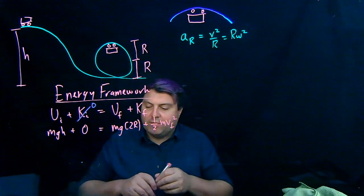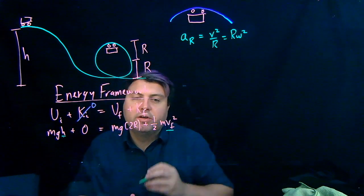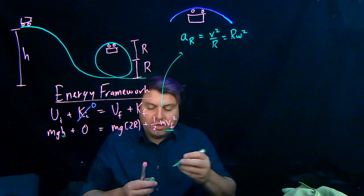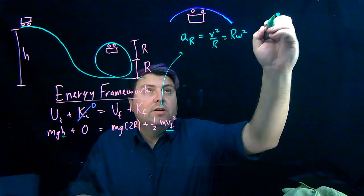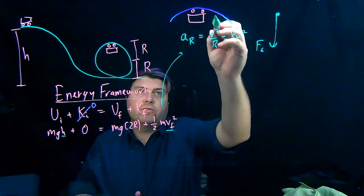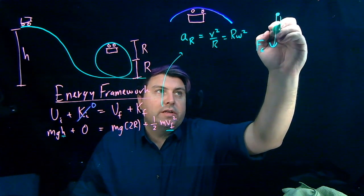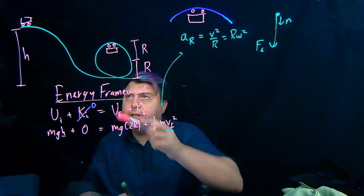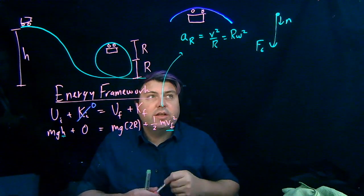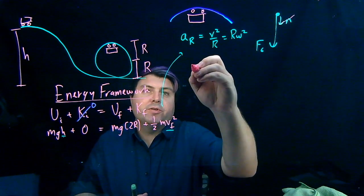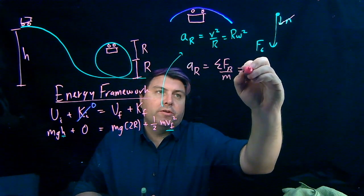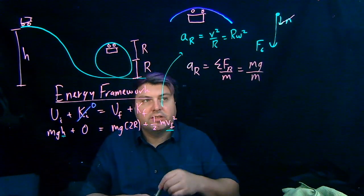We can go back and look at what's happening at the top of the loop. Looking at the free-body diagram, the forces on the cart are gravity pulling down, and the rails also exert a normal force pointing down. For the minimum safe height, this normal force gets smaller and smaller until it goes to zero. So the radial acceleration equals the sum of forces over mass, which is just mg over m. The m's cancel, giving us g equals v squared over r, or v squared equals gr.